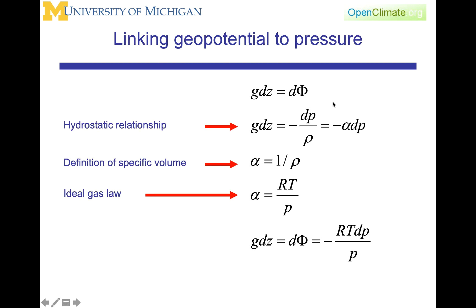To link geopotential to pressure, we're again going to use this idea of linking them as differentials. Back here to the definition, g dz is equal to d phi. We're going to now use the hydrostatic relationship, which you can see here as dp dz equals minus rho g, but rewritten here as g dz, which is d phi, is equal to minus dp over rho.